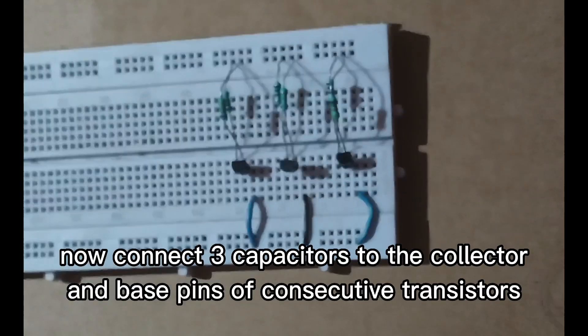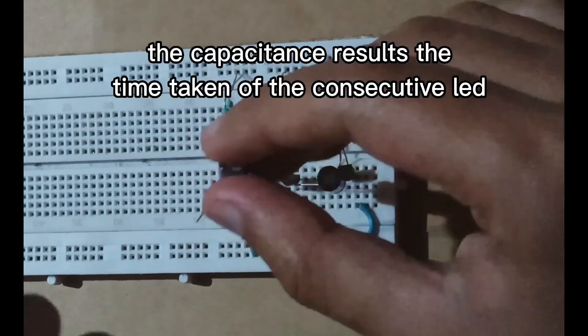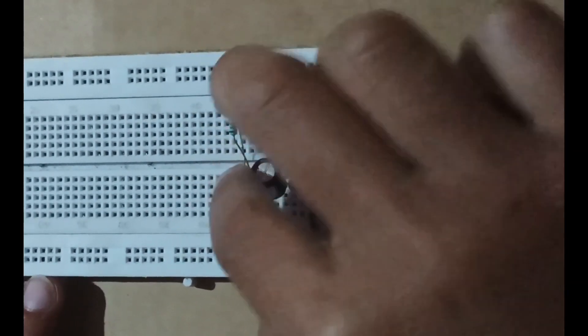Now connect three capacitors to the collector and base pins of consecutive transistors. The capacitance results in the time taken of the consecutive LED.